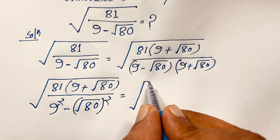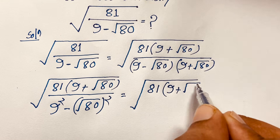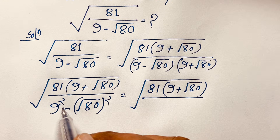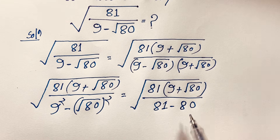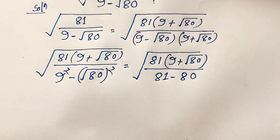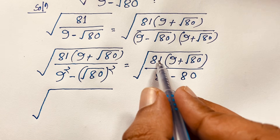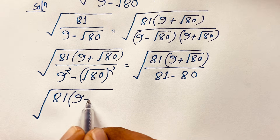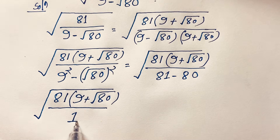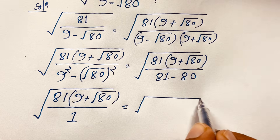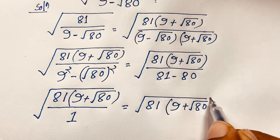The numerator is square root of 81 times (9 plus square root 80), and the denominator is 81 minus 80, which equals 1. So we are left with square root of 81 times (9 plus square root 80). This is a nice radical math result.